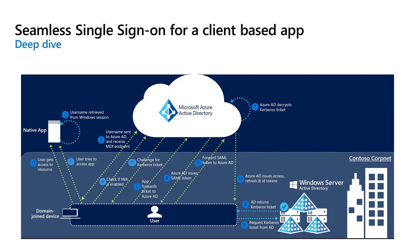If this step succeeds, a Kerberos challenge is issued. If the app is able to retrieve the Kerberos ticket, it forwards it up to Azure AD's integrated authentication endpoint. Azure Active Directory then decrypts the Kerberos ticket and validates it. Azure AD signs the user in and issues a SAML token to the app. The app then submits the SAML token to Azure AD's OAuth 2 token endpoint. Azure Active Directory validates the SAML token and issues to the app an access token, a refresh token for the specified resource, and an ID token. The user then gets access to that application.